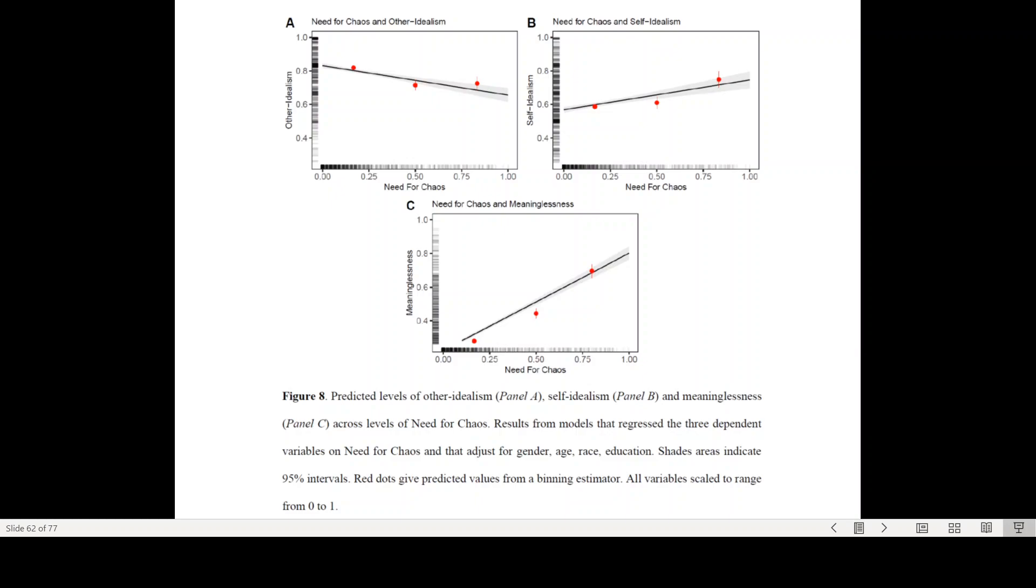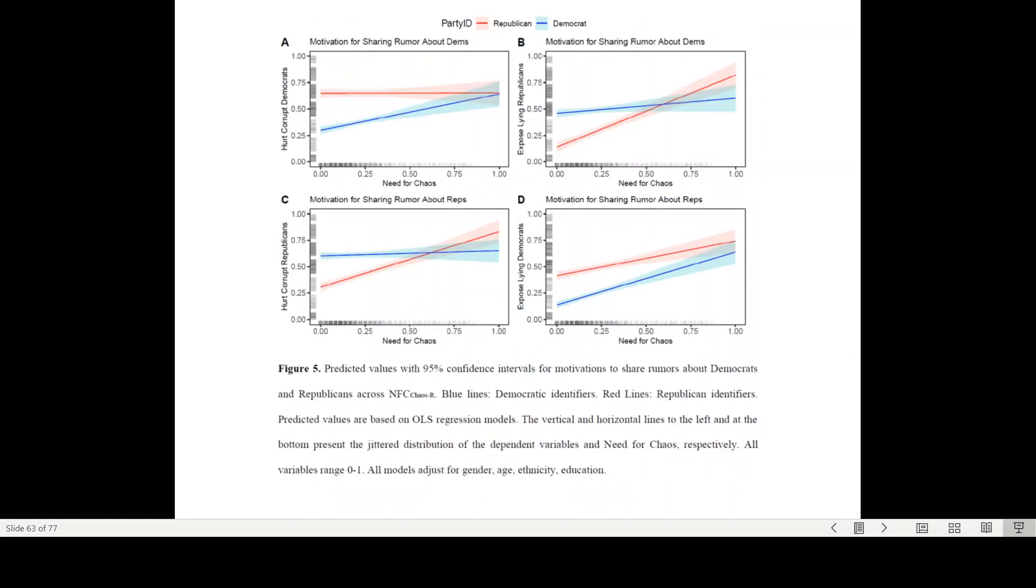And so what this now shows is that these individuals that follow this kind of ideology, this need for chaos, tend to be marginalized, lonely individuals with the ambition to rise through the social system. So by undermining the social system, you actually would have a chance, because you're on the margin of the system, to potentially rise and increase your social position. And they did some very interesting, a range of interesting studies where they looked at, for example, the motivation for sharing rumors about Democrats.